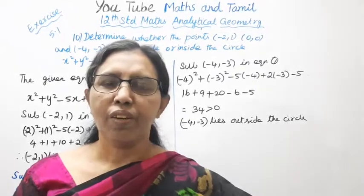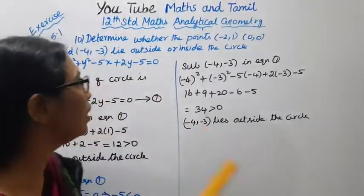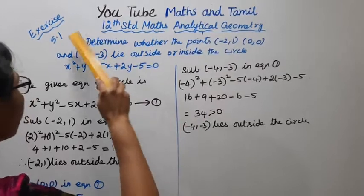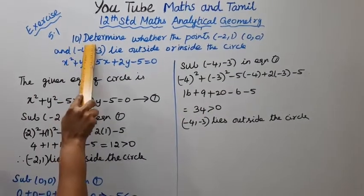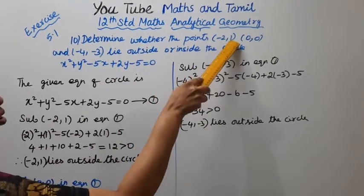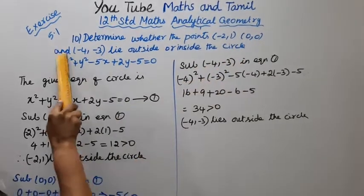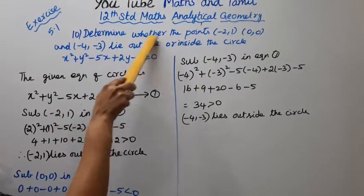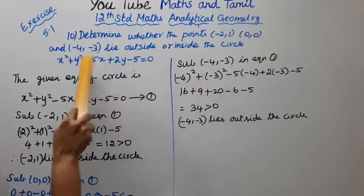Hello students, welcome to Max and Tamil channel. 12 Standard Max Analytical Geometry Exercise 5.1. Determine whether the points minus 2, 1 and 0, 0 and minus 4, minus 3 lie outside or inside the circle.